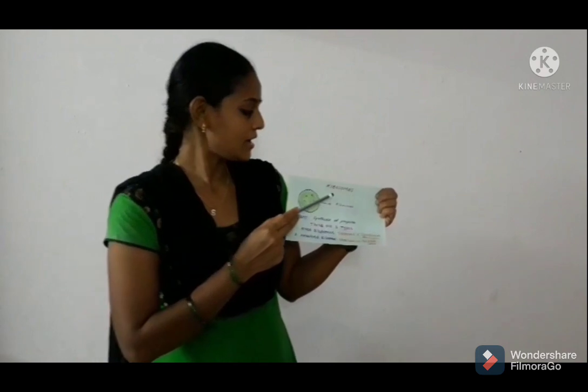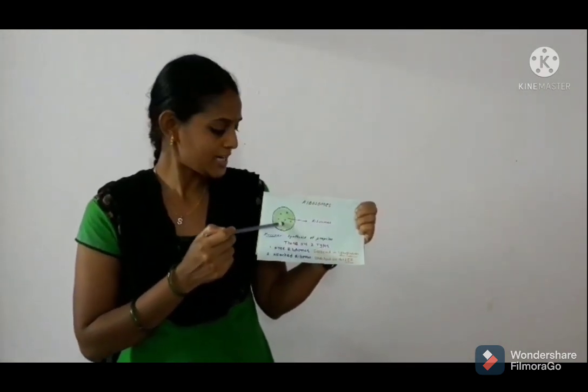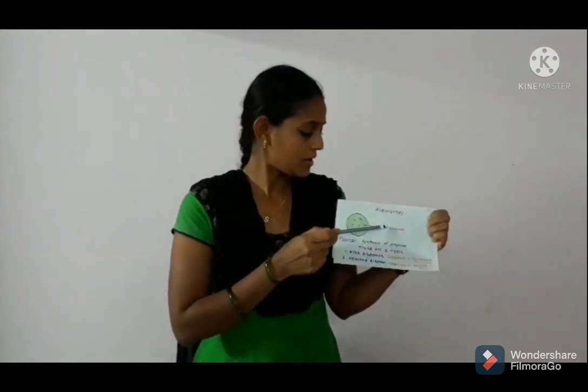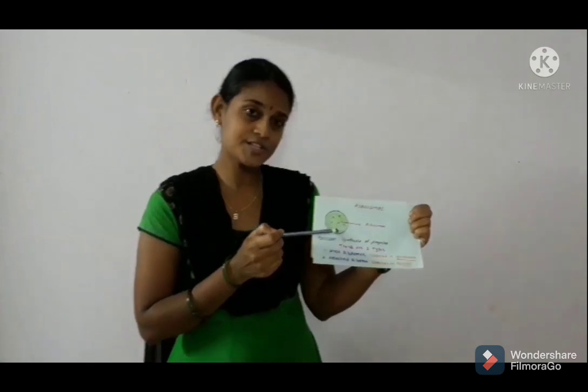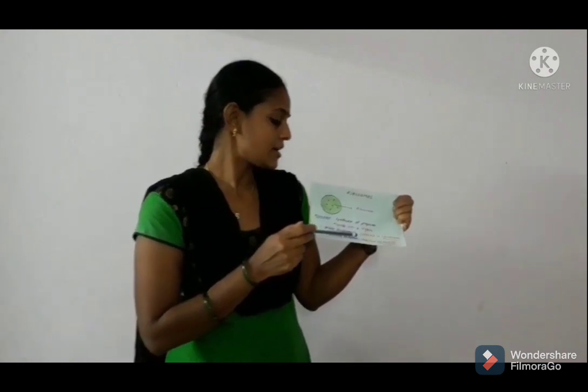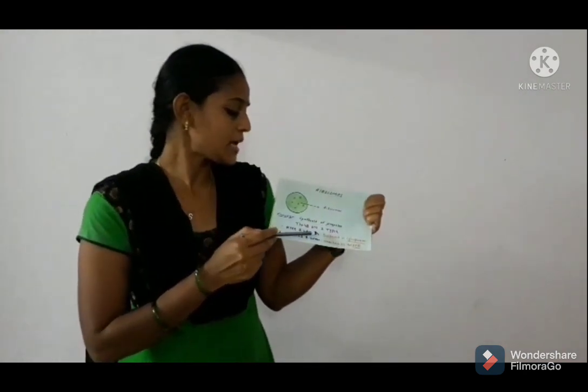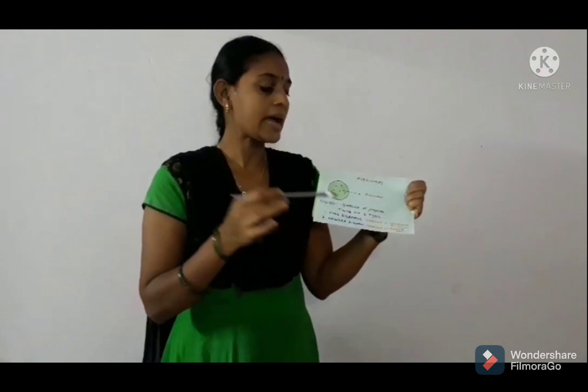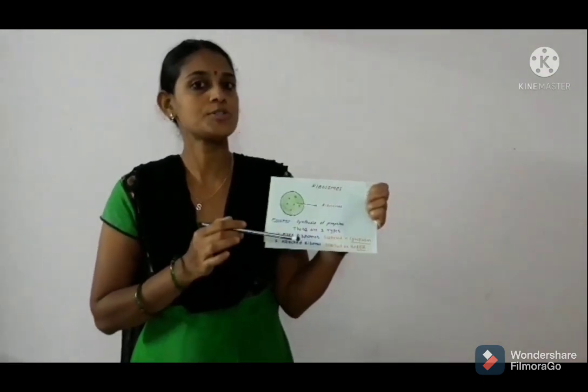The next cell organelle is ribosomes. Some granule-like structures floating in the cytoplasm are called ribosomes. Ribosomes are of two types: free ribosomes, which are found in the cytoplasm, and attached ribosomes, which are attached on the endoplasmic reticulum. The function of ribosomes is synthesis of proteins. All of you draw this diagram in your notebook.